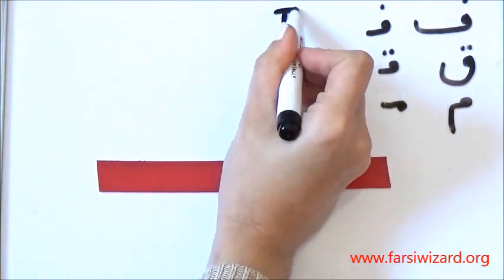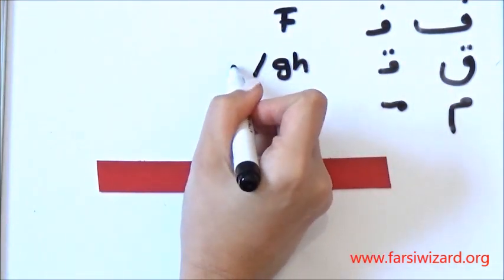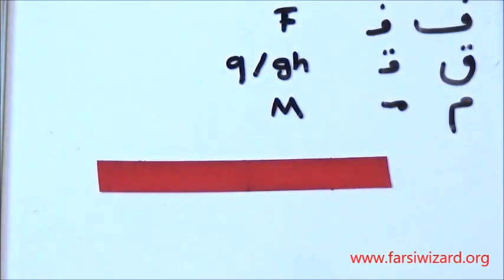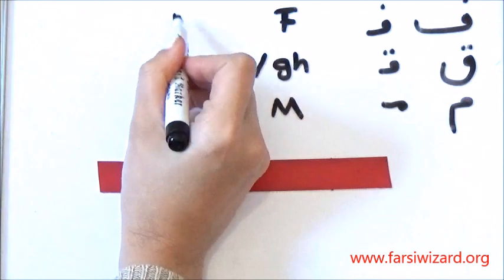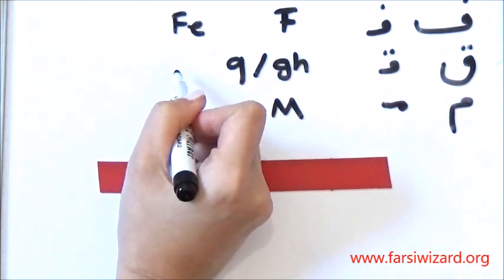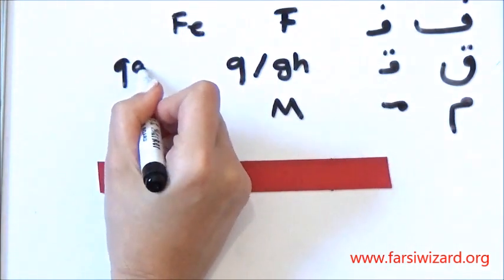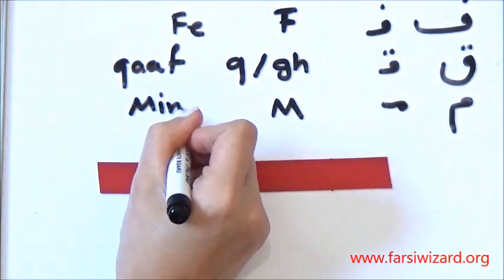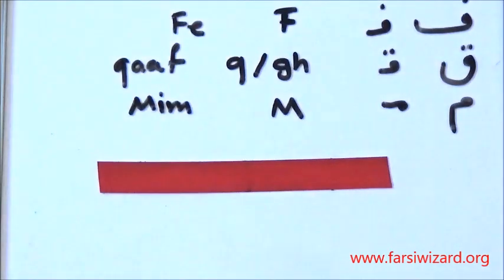The first letter that you see here is the equivalent of F, the second one the equivalent of Q, and the last one the equivalent of M. The first one is technically called Fe, second one Qaf, and the third one Mim. You notice that the second version Q or Qaf doesn't exist in English.